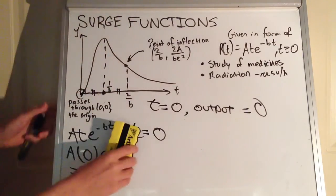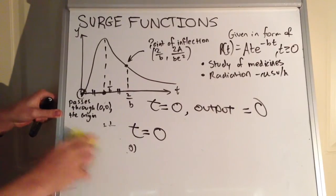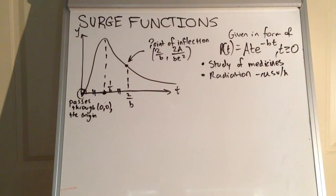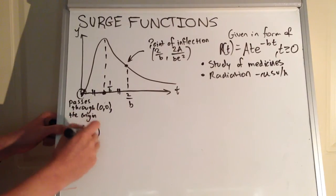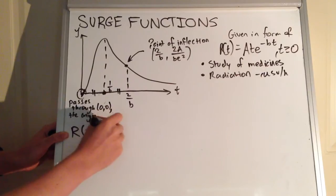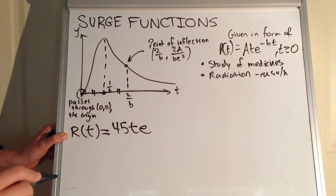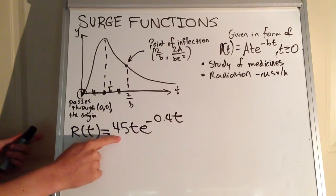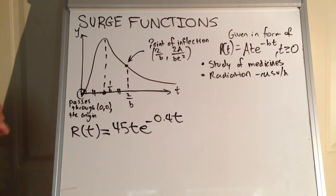Now let's start having a look at some more questions regarding the surge model, looking at the application of radiation and radiation levels. Regression analysis produced a model for the radiation levels around a nuclear disaster site. This model was given by R(t) — radiation at a given time, in microsieverts — equals 45t·e to the power of negative 0.4t. As you can see, that's in the form of a surge function.